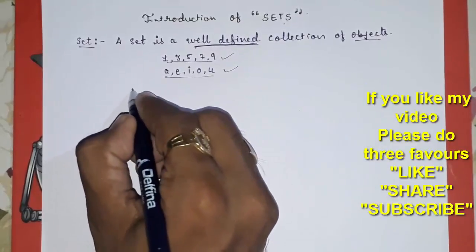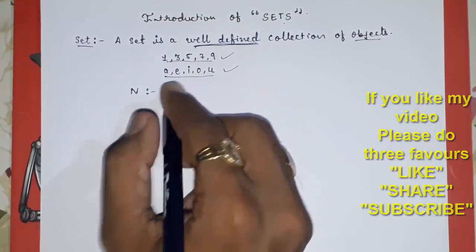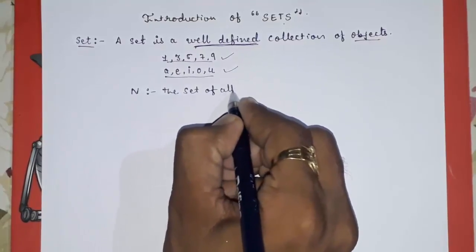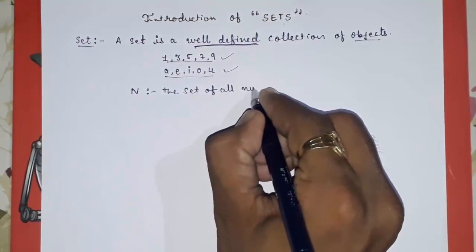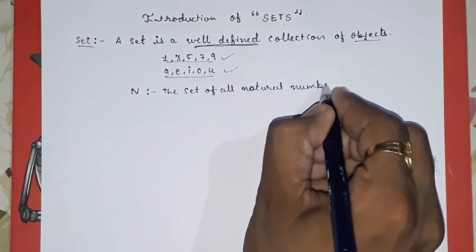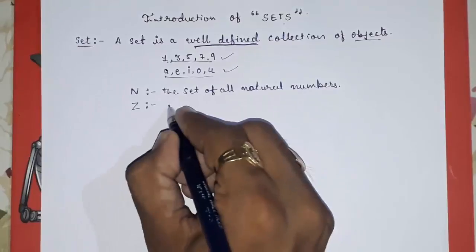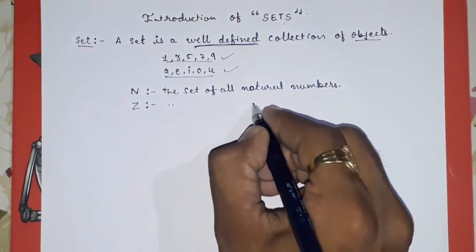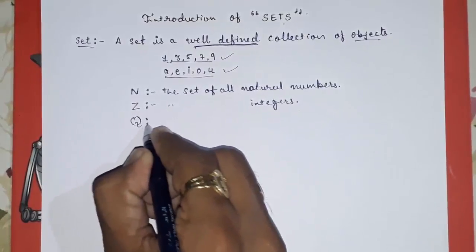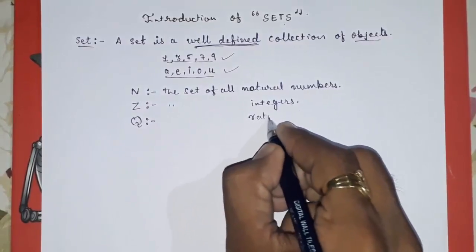Now I am going to tell you about a few important sets. Capital N is the set of all natural numbers. Capital Z is the set of all integers. Q is the set of all rational numbers. These are the sets you have to keep in mind.